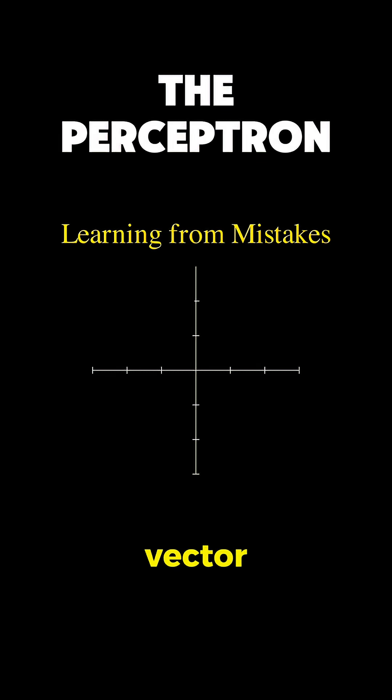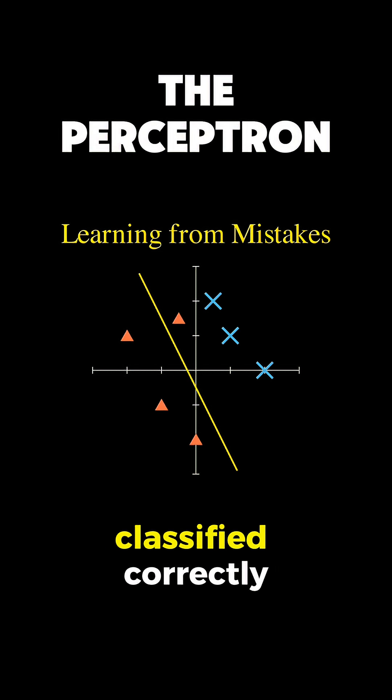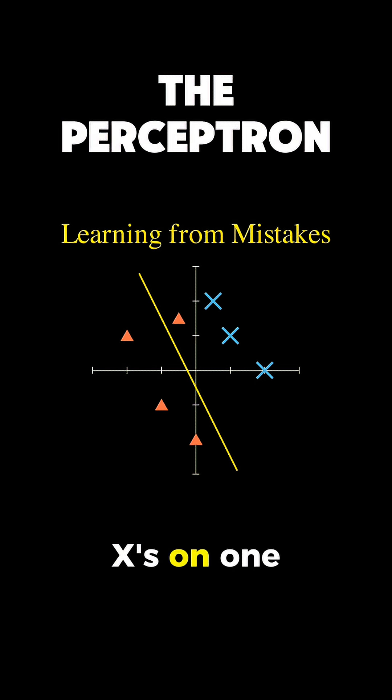Suppose we have an initial weight vector that gives us this yellow line. Most points are classified correctly. X's on one side, triangles on the other.